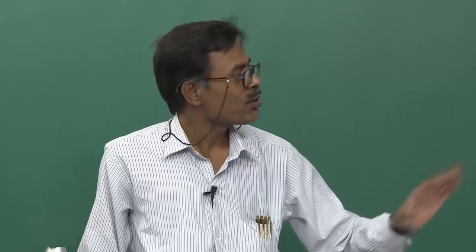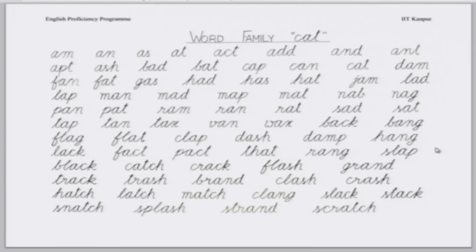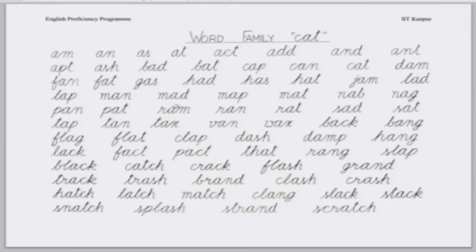So, children, what do you see common among these words? The vowel 'a'. And? Pronunciation. All the words — in all these words, 'a' is pronounced in a particular manner. That is the reason why all of these words have been put together in one word family — 'cat' — which captures the sound.